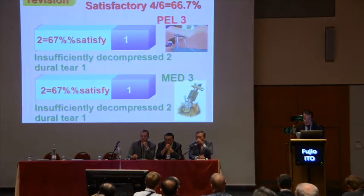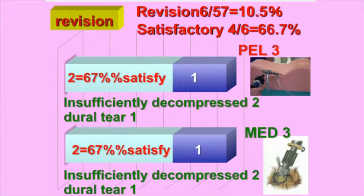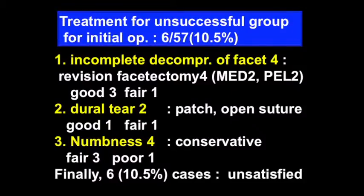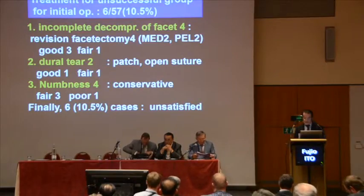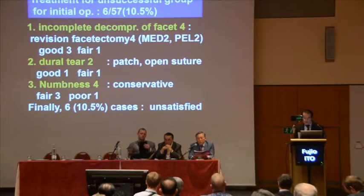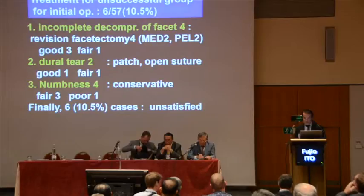Six of the 57 cases were revised. All revision cases had been insufficiently decompressed initially. Three cases were done by open laminectomy — two were satisfactory. The other three cases were done by microendoscopic decompression — two were satisfactory. The unsatisfied group of the initial operation was 10.5% of the total 55 cases. The first subgroup had incomplete facet decompression and were revised: two by MED and two by open laminectomy. The second subgroup had two dural tear cases, amended one by patch repair technique and one by open dural suture. The third subgroup, residual numbness cases, were followed up by conservative therapy. Finally, 10.5% — six cases total — were unsatisfactory.